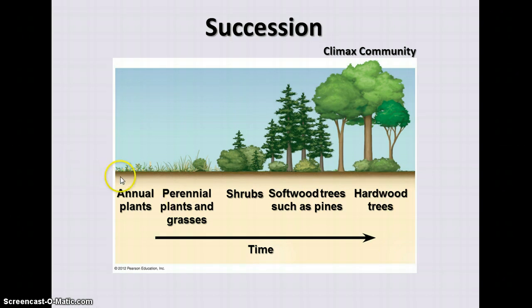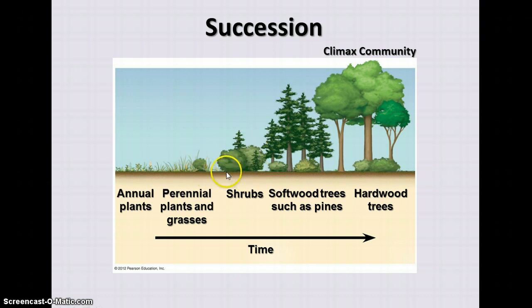The first things to colonize the area are plants, since there is nothing for animals to eat yet. Annual plants like weeds are the first to grow, followed over time by perennial grasses and other perennial plants that reseed themselves and continue growing year to year. Then small bushes and eventually shrubs develop, and as these plants grow, more and more animals colonize the area.